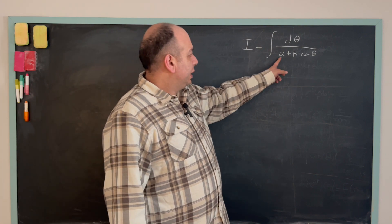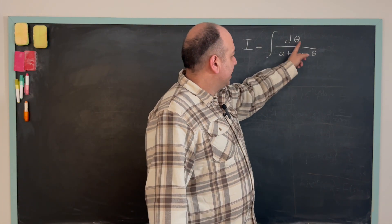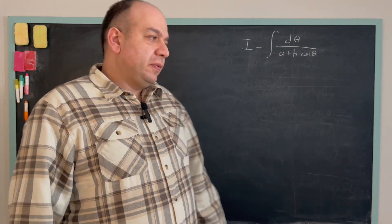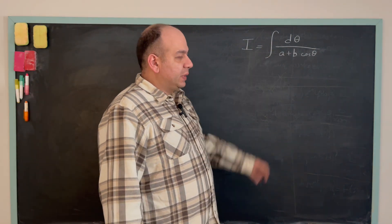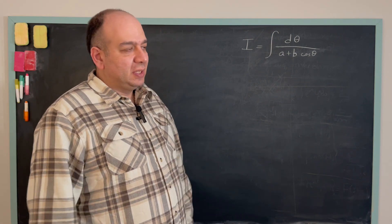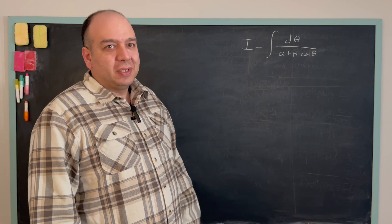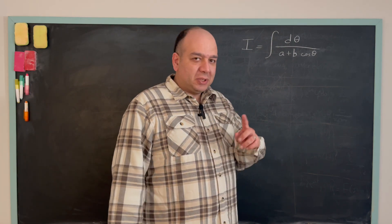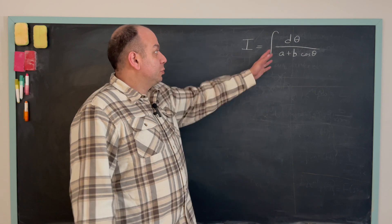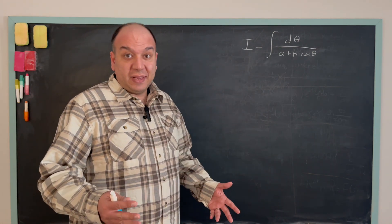Here a and b are real numbers and the integration is over theta. So whenever we see an integral in this form, the substitutions I just mentioned in general don't work. There is a special kind of substitution we use to solve these types of integrals and it is called the tangent half-angle substitution.